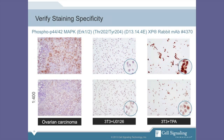We can contrast that result with that obtained with a phospho-MAP kinase rabbit monoclonal antibody. At its optimal dilution, there is no staining in the negative control, and a robust signal in the positive control. The tissue staining, therefore, can more readily be interpreted accurately.